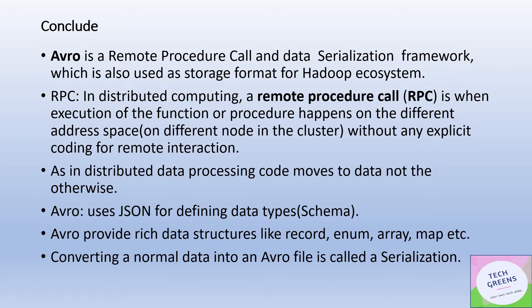To recap: Avro is one of the most interesting and major storage formats for Hadoop ecosystems. Apart from being a storage format, it is also an RPC and serialization framework. One of the most important features is that the schema is stored within the file itself as JSON, making schema evolution very efficient. Avro also provides a rich set of data structures for writing your data.